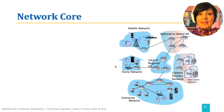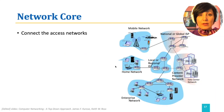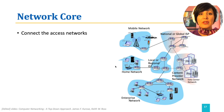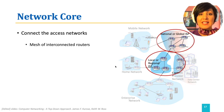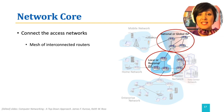The internet connects end systems together to communicate with each other. The network core is an interconnected mesh of switches and routers connecting access networks together, making this communication possible.